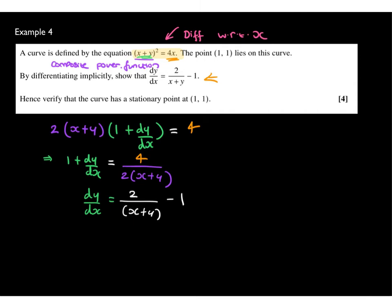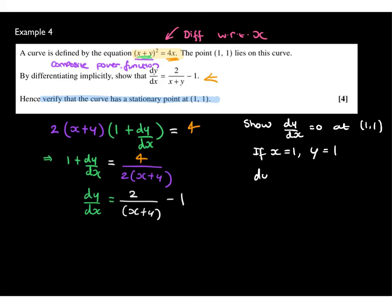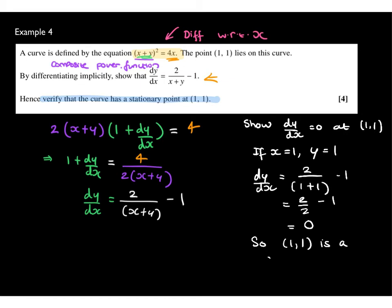Now verify the curve has a stationary point at (1, 1). We show dy/dx equals 0 at that point. Substituting x equals 1 and y equals 1: dy/dx equals 2 over (1+1) minus 1 equals 2/2 minus 1 equals 0. Therefore (1, 1) is a stationary point.